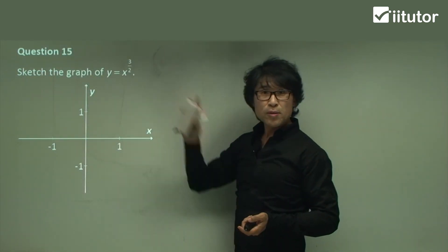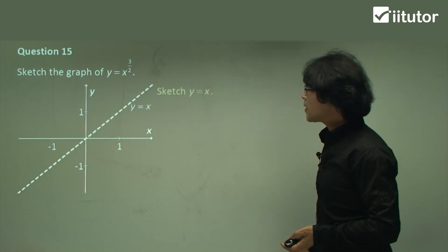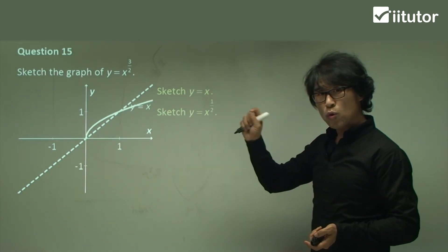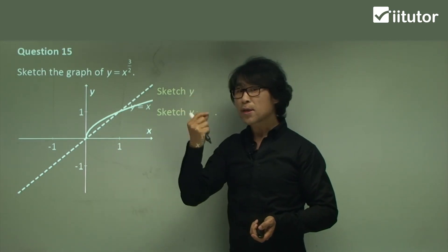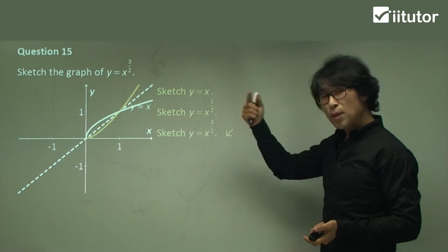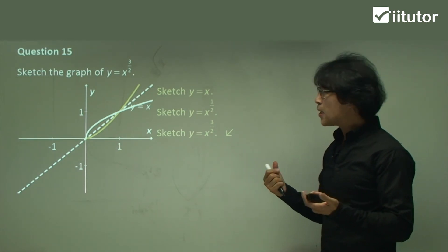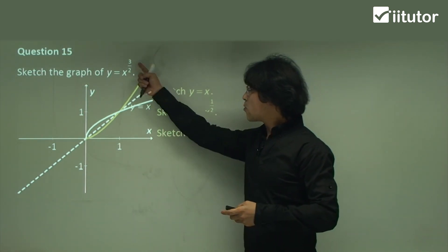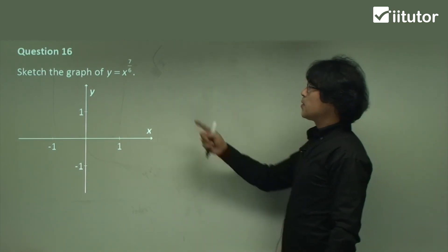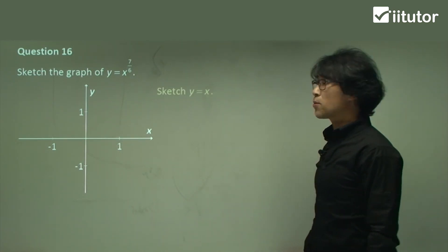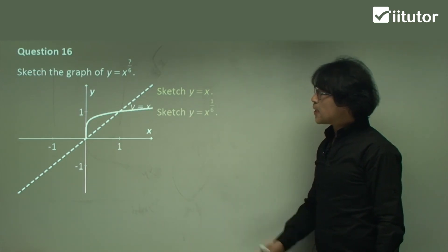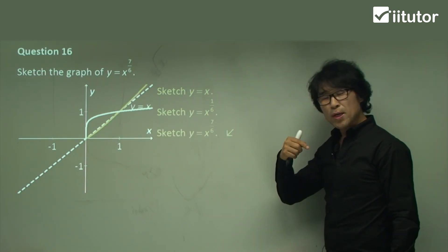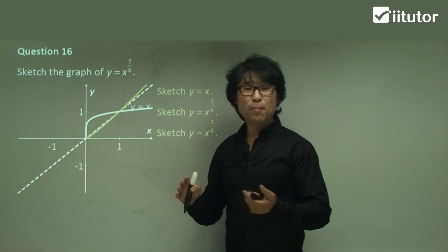Question 15: greater than 1 now. Sketch y equals x, then x to the power of 1 over 2 — the half power. Then cube that — in this case 3 over 2, which is greater than 1, so it will be below. You can see some patterns: the skill applied depends on whether the power is greater than 1 or smaller than 1. Question 16: also greater than 1. Sketch y equals x, then x to the power of 1 over 6, and then raise to the power of 7 — giving 7 over 6, greater than 1. The result will be a little below the y equals x graph.